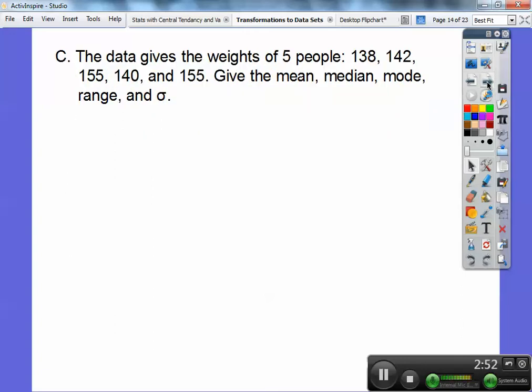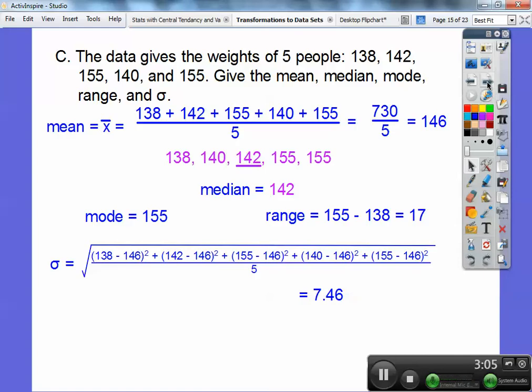Okay, so here's data that gives the weights of five people: 138, 142, 155, 140, 155. Give the mean, median, mode, and standard deviation. So I would require my students in the class to do this you guys, but obviously we don't have time on this video. So the mean is we add up the numbers and divide by five, so I get 146. Okay, the median, I had to rearrange them from smallest to biggest and then find the middle one. The middle one is that one right there, 142.